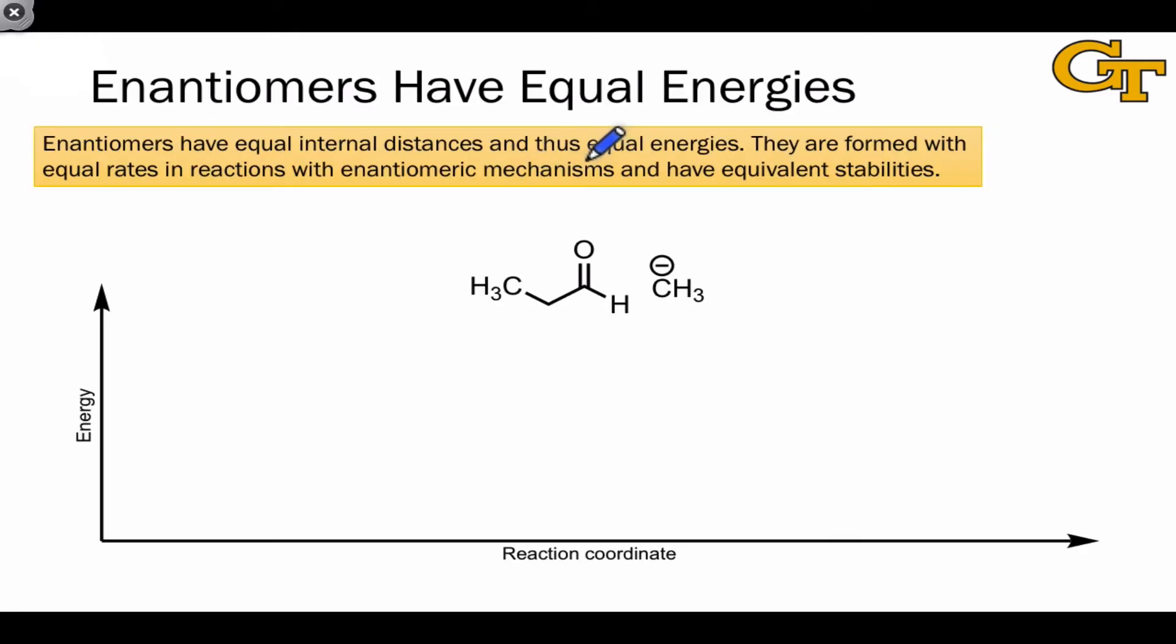We've mentioned before that because enantiomers have equal internal distances, they have equal energies. This means that in reactions that could generate one of a pair of enantiomers through enantiomeric or mirror image mechanisms, we should expect that both enantiomers are formed with equal rates and that they have equal thermodynamic stabilities since this is tied to their free energies.